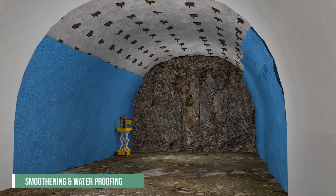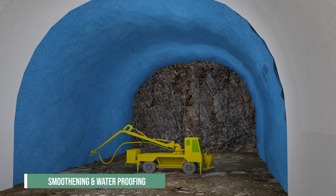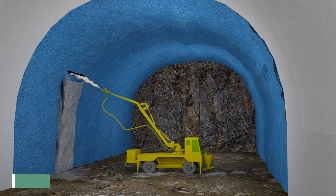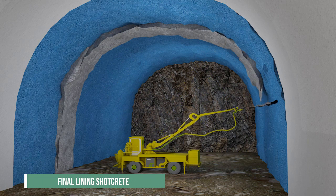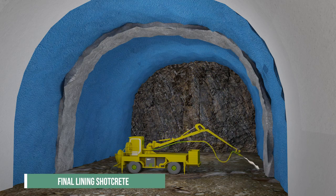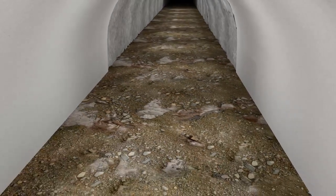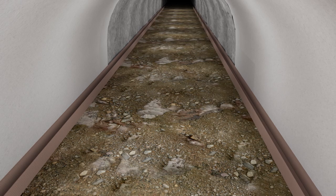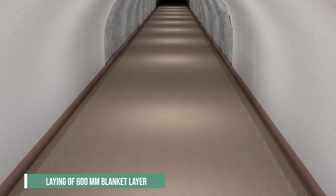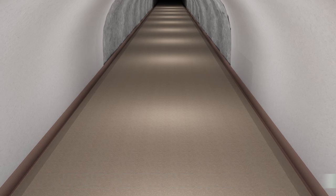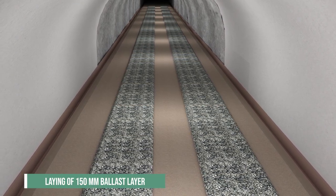Smoothening over the primary shotcrete is done, followed by application of a waterproofing membrane and application of the final lining shotcrete. Drains are installed under the tunnel along with track work. A blanket layer of 600mm is laid, and 150mm thick ballast is evenly spread.